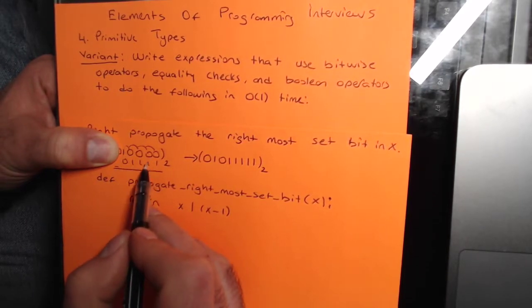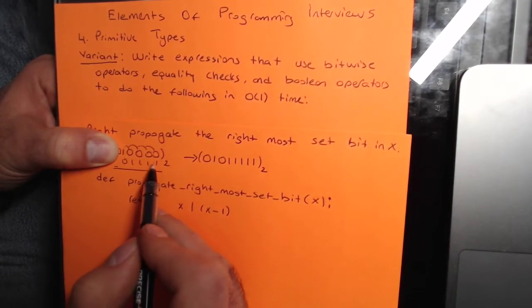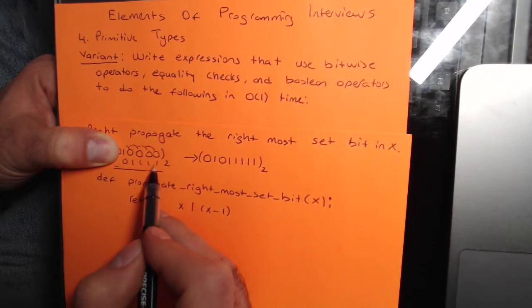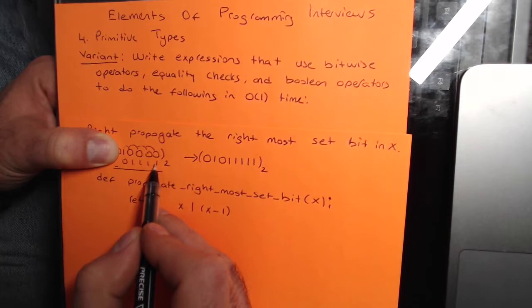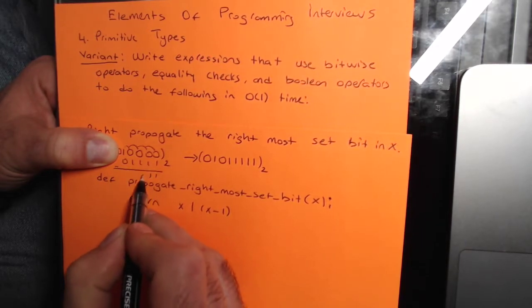Once you subtract 1 from it, that becomes 01111. And how do you get all these digits to be 1? You think about OR operator. OR operator will give you a result of 1 if any of the bits is set to 1. So in this case, we are getting 11111, right? Here we go.